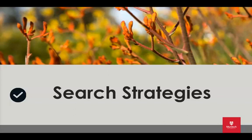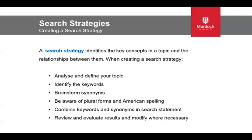Once you have clearly defined and analysed your topic, you can then develop a detailed search strategy using and combining the terms. The search strategy identifies the key concepts in the topic and the relationships between them. When creating a search strategy: analyse and define your topic, identify the keywords, brainstorm synonyms — you can also check these with your supervisor. Be aware of plural forms, American spelling, or alternative spellings. Combine keywords and synonyms into a search statement, then review, evaluate results, and modify where necessary.